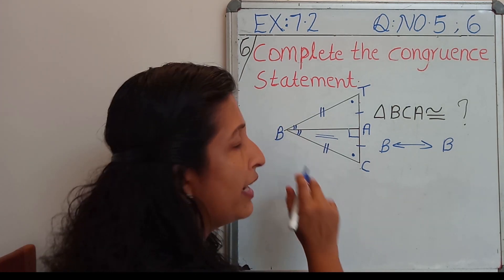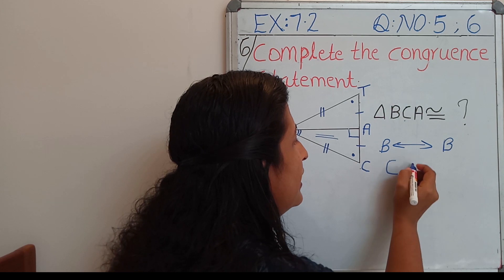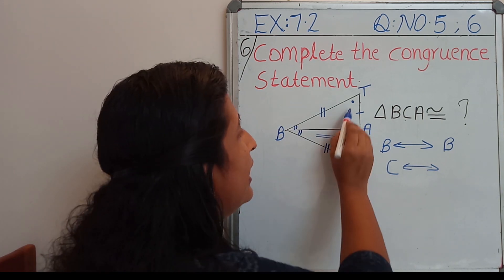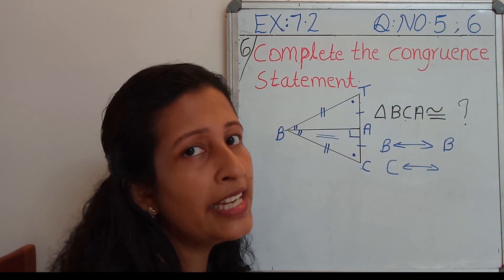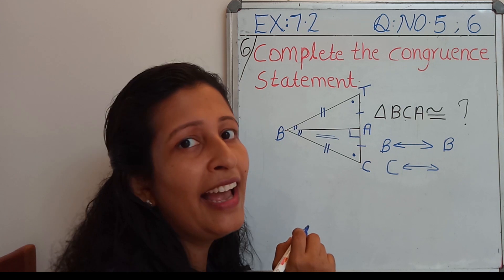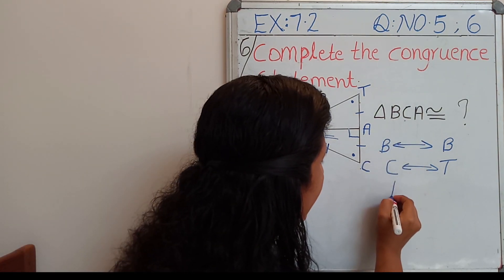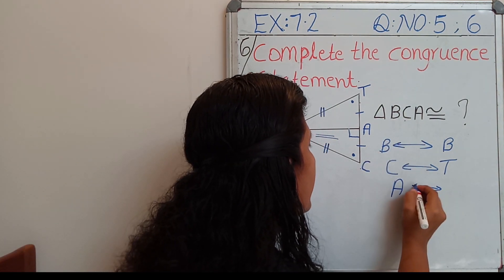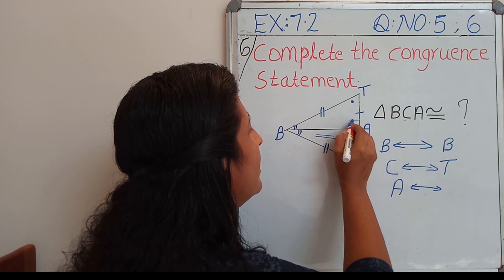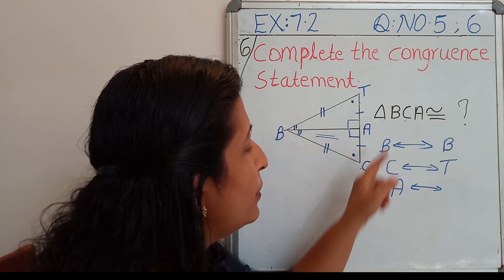So B is corresponding to B itself — these two angles are the same. Then C: C is corresponding to T. C is marked by a dot here, and in the next triangle T is marked by a single dot, so C and T are corresponding. Then the last one, A: A is a right angle, and T should also be a right angle — wait, A is corresponding to A itself.